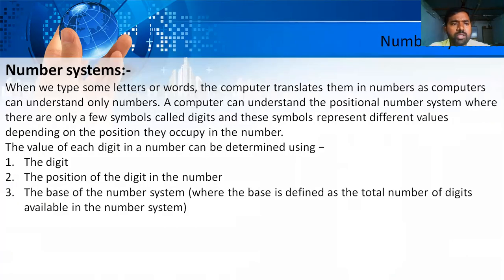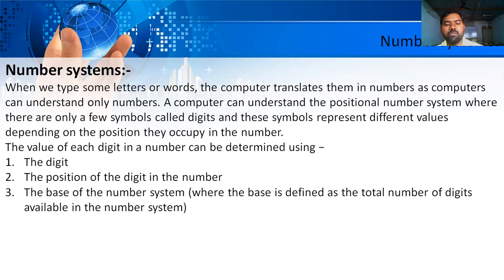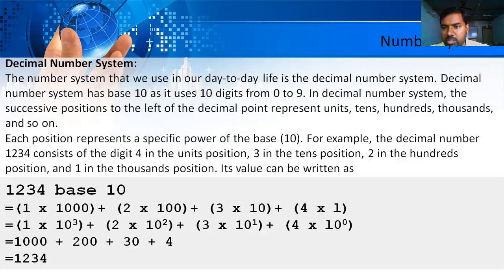Next is number systems. When we type letters or words into a computer, they are translated into numbers and stored. In a positional number system, there are only a few symbols called digits. These digits represent different values depending on their position. Three things differentiate number systems: digits, position, and base number. As per the syllabus, we study the decimal number system and the binary number system.